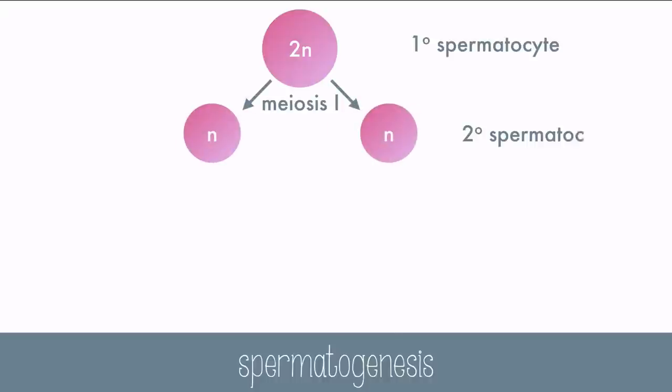The creation of sperm is called spermatogenesis. It starts with a diploid cell called a primary spermatocyte, and after meiosis I, it forms two secondary spermatocytes, which are haploid, but have a duplicate chromatid with them.